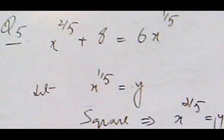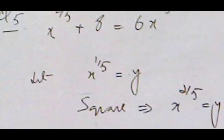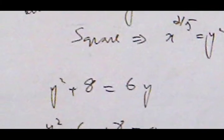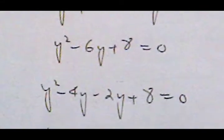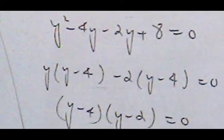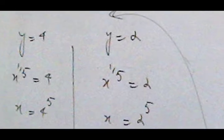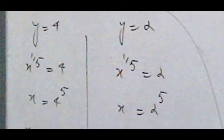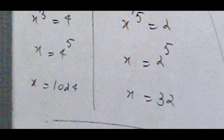In the next question we have powers 2/5 and 1/5. The smaller power is 1/5. We let x^(1/5) equal y, so the equation becomes y² minus 6y plus 8. The factors of 8 are 4 and 2 with negative signs, giving y equals 4 and y equals 2. Since y equals x^(1/5), we take the 5th power of both sides: 4⁵ equals 1024 and 2⁵ equals 32.